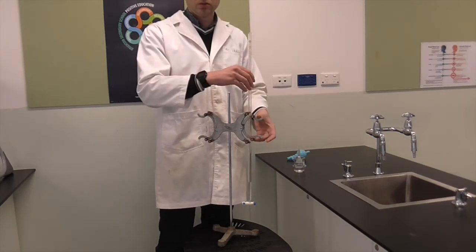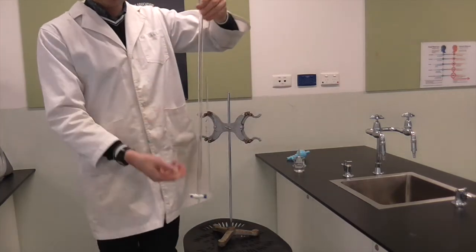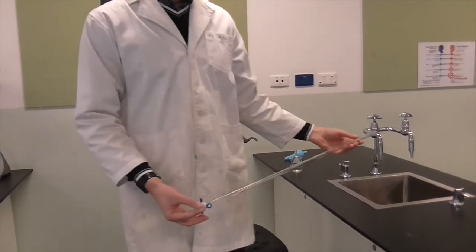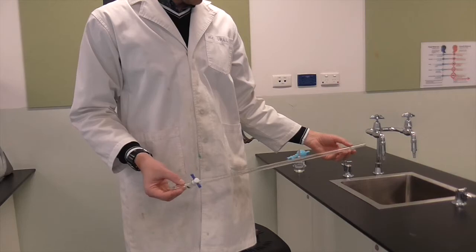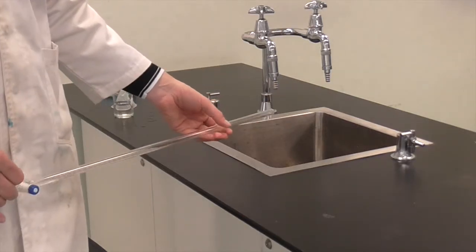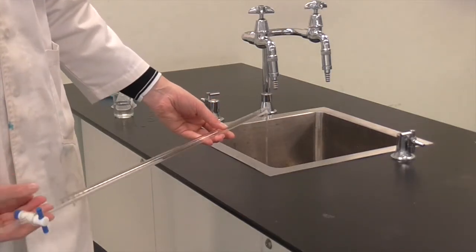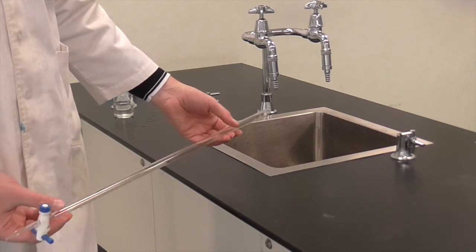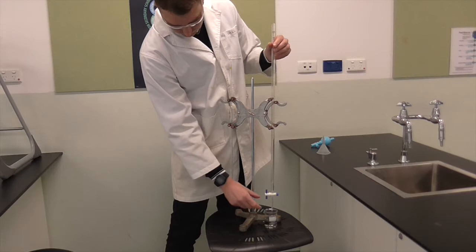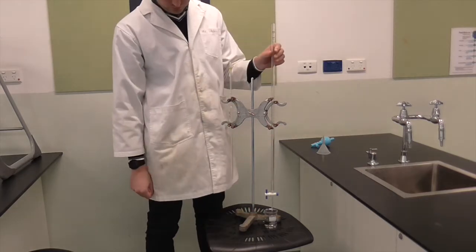Now we're going to take the burette out and carefully tilt it on its side and rotate the burette. While we're doing this, make sure the end of the burette is over a sink so if any solution comes out it will go down the sink. Then we're going to put the burette back into the burette clamp and drain out the remaining solution. This process needs to be repeated again with the solution to be used to prevent dilution.